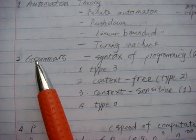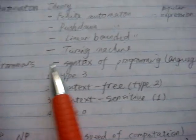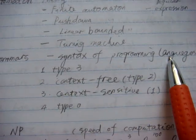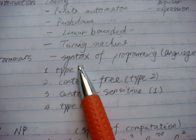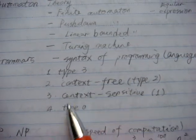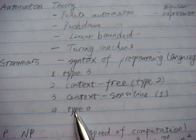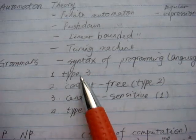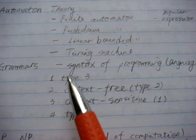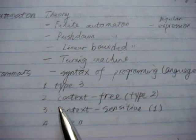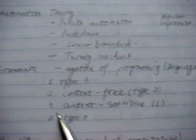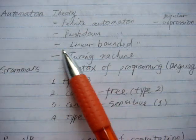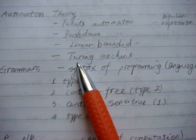Next, we're going to talk about grammars, which is the syntax of programming languages. We're going to talk about four types of grammars: type 0, type 1, type 2, and type 3. We're going to talk about their relationship between automaton — the four automata we covered in the first section.